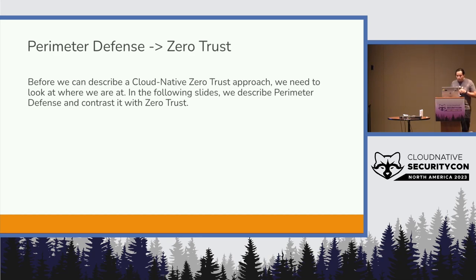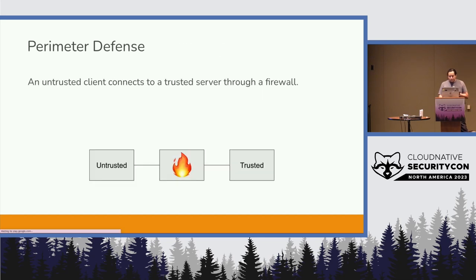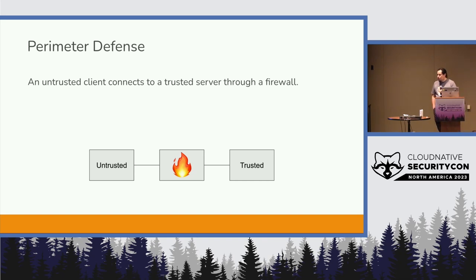Before we really dive in, let's contrast the difference between perimeter defense and Zero Trust. The simplest definition of perimeter defense: something untrusted goes through a security control and is now connected to a trusted environment. Everything on the left is untrusted, goes through the security boundary, and once you've passed that boundary, you're in a trusted environment.